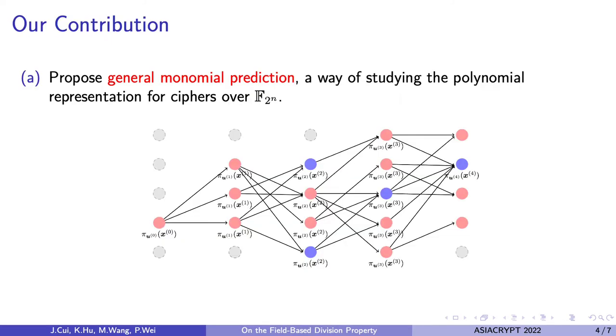In this paper, we focus on the polynomial representation of ciphers over F2^n. First, we propose general monomial prediction, and this technique is used to detect the algebraic representation of field-based ciphers by tracing the so-called general monomial trails. It is an extension of division property over binary field.